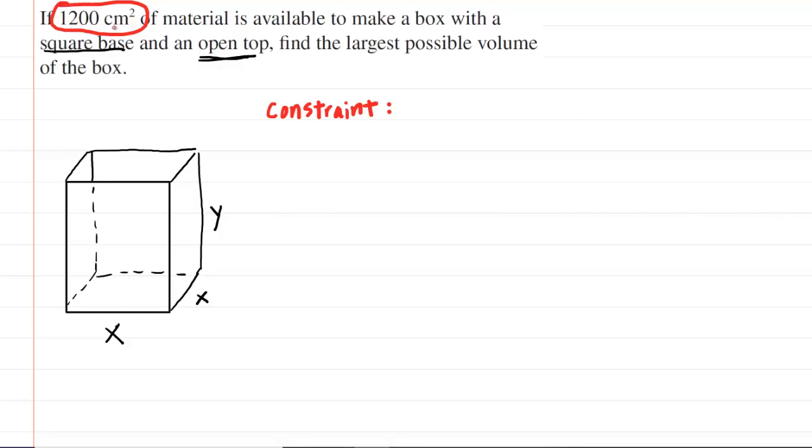So in this case, we are told that there are only 1,200 centimeters squared of material available to make this box. You'll notice that the unit is centimeters squared. The fact that it's given in centimeters squared is a clue that that number pertains to the surface area. If it had been centimeters cubed, then that would have represented volume. But any unit that has a square on it represents an area, in this case the surface area. So basically, what it's telling us is that the surface area, which we might just call S, must equal 1,200 centimeters squared.